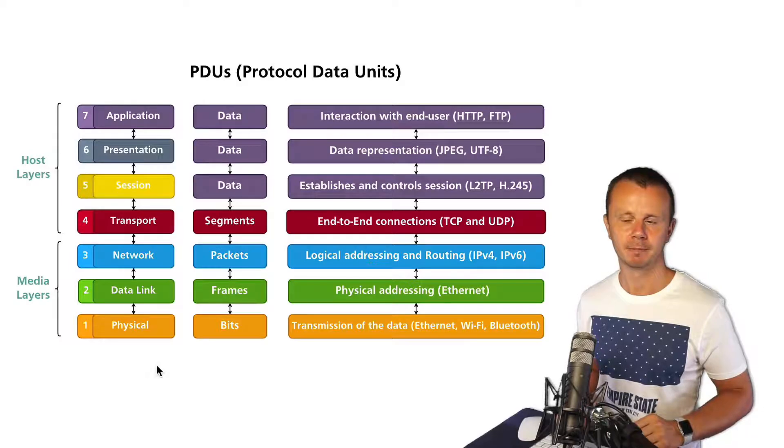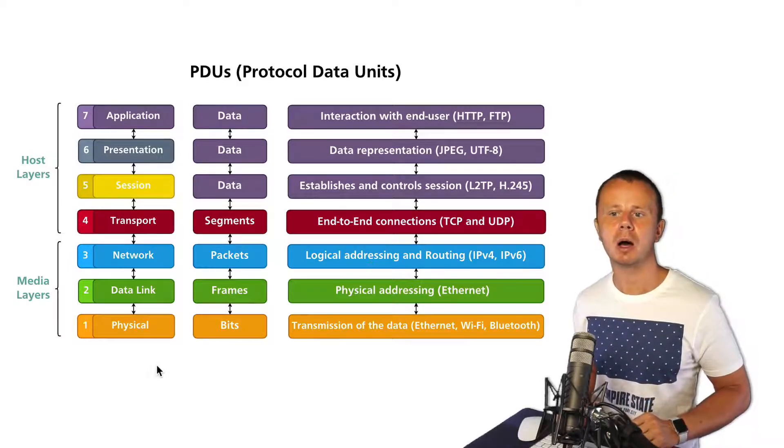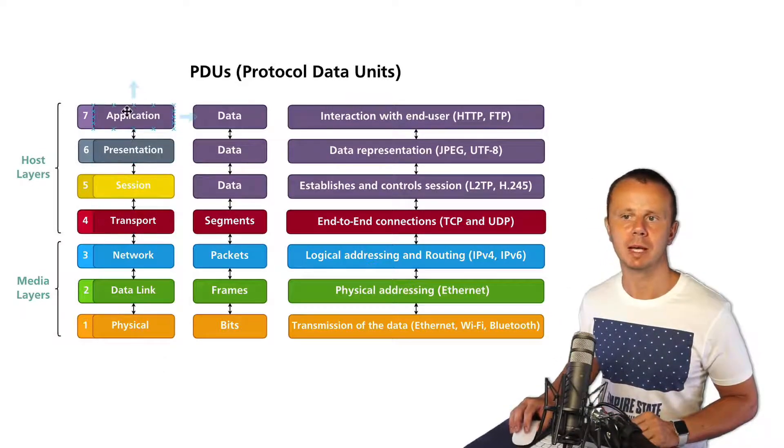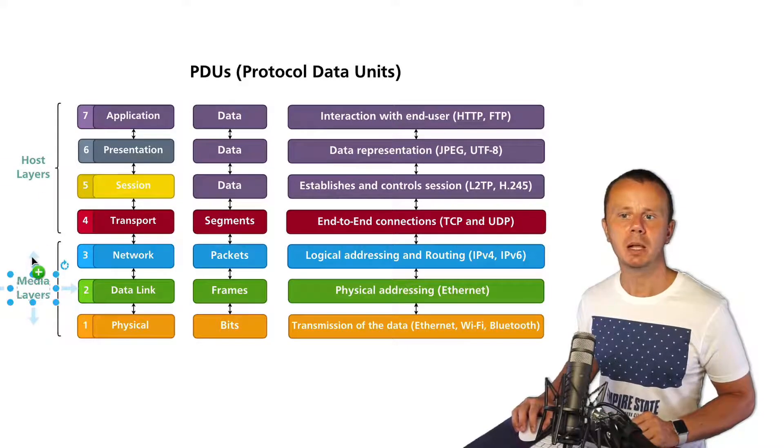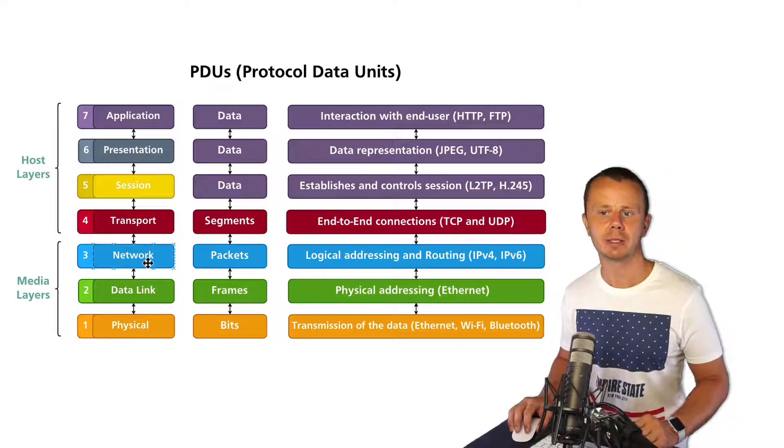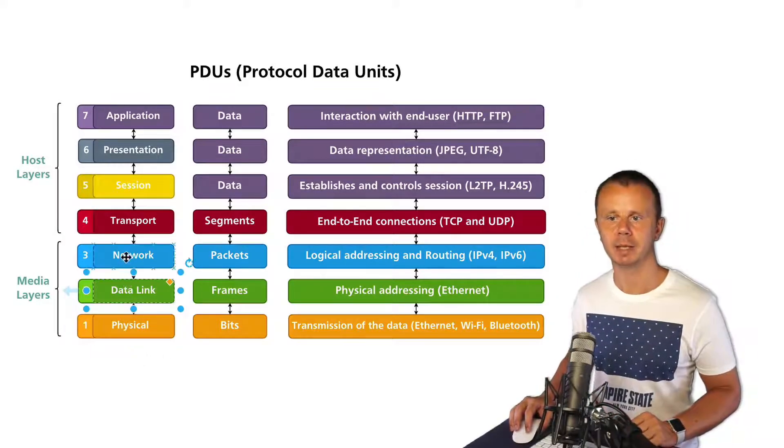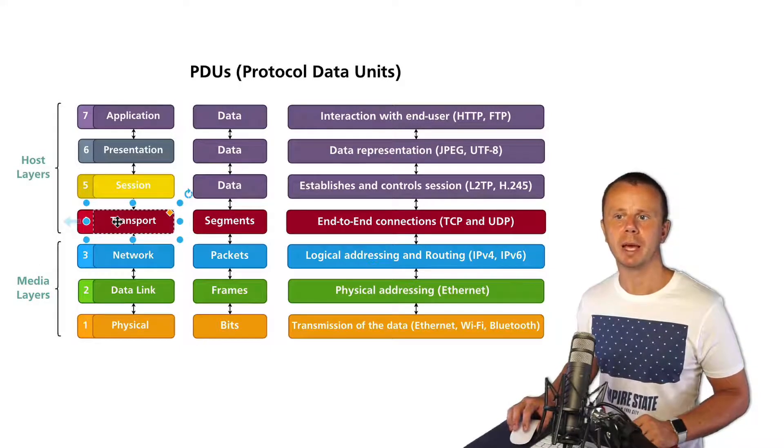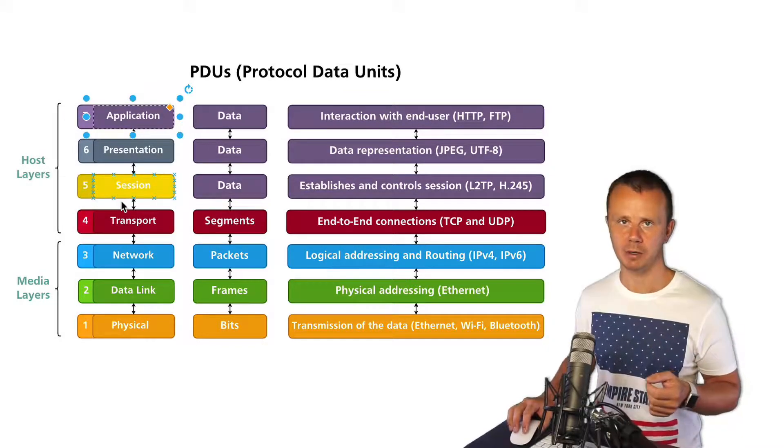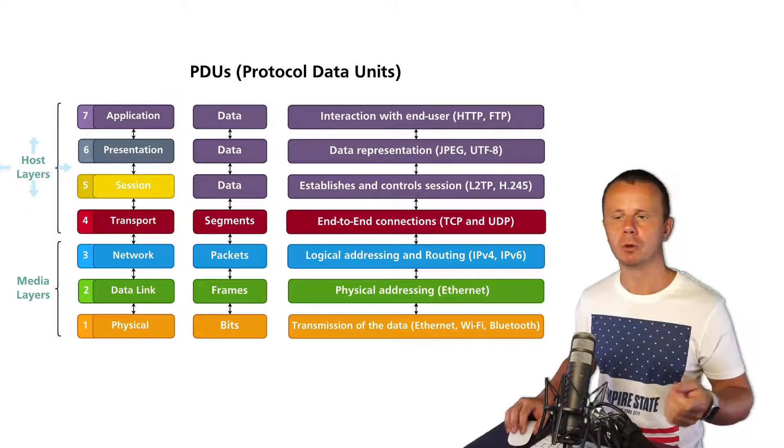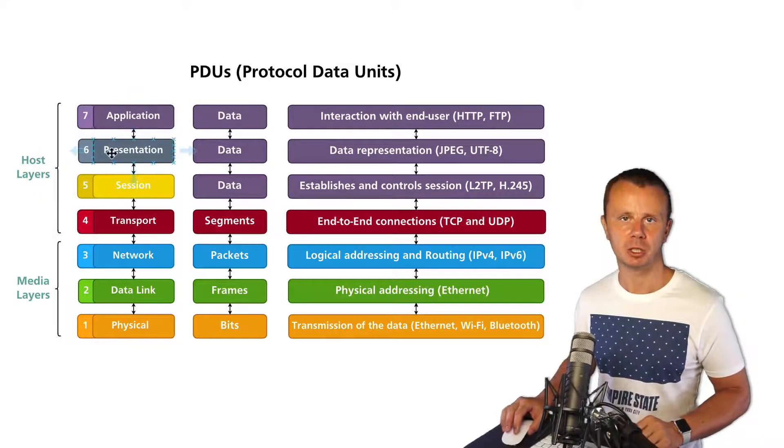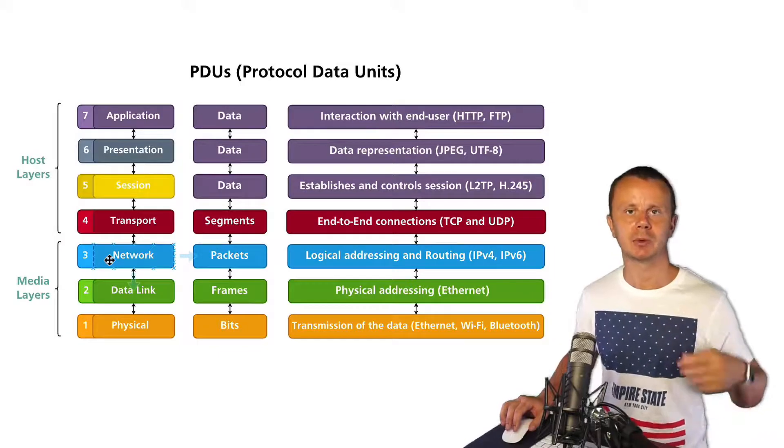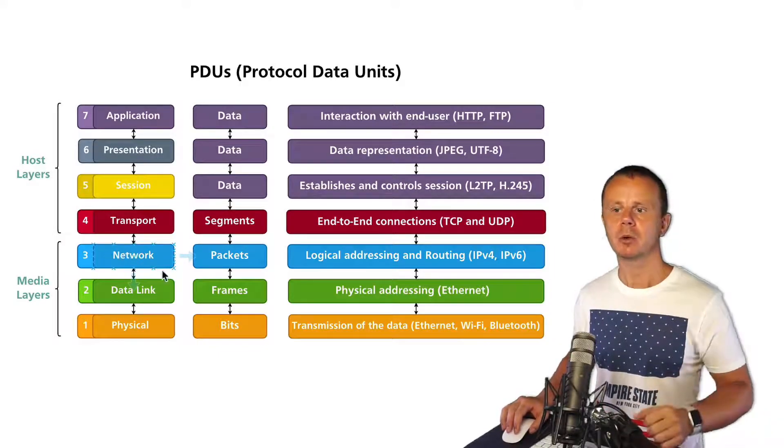Let's discuss other PDUs for other layers. You see that I have divided all seven layers of the OSI model into two different sections: media layers and host layers. The first three layers - physical, data link, and network - are media layers. The next layers, starting from transport and ending with application, are host layers. This means that a host, for example a mobile phone or computer, prepares some application data and then sends it to media layers in order to get this data transmitted over the network.